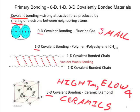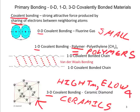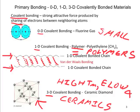Both 3-D covalent and ionic ceramics have a crystal lattice structure, as shown in diamond. 1-D covalent bonding has different properties than 0-D or 3-D covalent bonding and is associated with polymers — remember, 1-D equals polymers. 1-D covalent bonds are very long chains of covalently bonded molecules. A polymer, by definition, is a material made of long chains of 1-D covalently bonded molecules held together by secondary bonding, called van der Waals bonding.